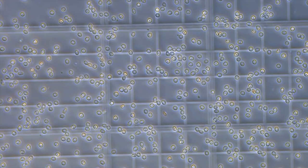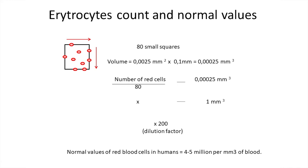To calculate the number of red cells per cubic millimeter in our sample, the volume of each small square must be taken into account, since they have a surface area of 0.0025 square millimeters, and we know that the height of the chamber is 0.1. The volume of each small square will be 0.00025 cubic millimeters, so we can already know how many red cells per cubic millimeter we have in our diluted sample. If we multiply this result by the dilution factor applied, we obtain the number of erythrocytes per cubic millimeter of the original sample. Normal values of red blood cells in humans are around 5 million per cubic millimeter of blood.